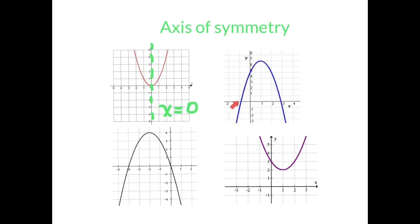For the next one, I notice my vertex is here. Remember, your axis of symmetry always touches your vertex. Therefore, this is that imaginary line, and this is x equals one — that is the line that we're describing.